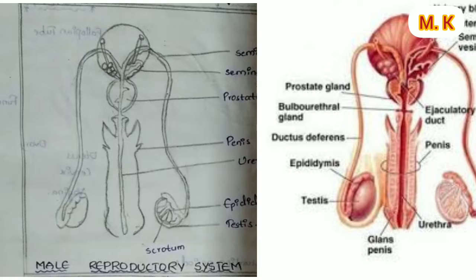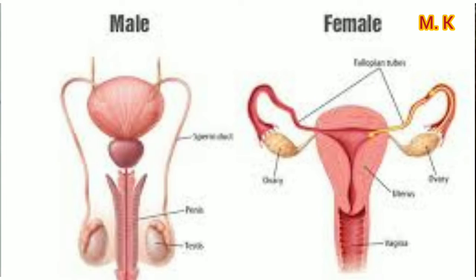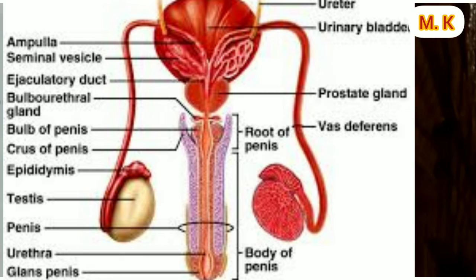The function of Vasa efferentia: the seminiferous tubules open into Vasa efferentia, and they carry sperms into the epididymis. Epididymis function: the Vasa efferentia open into the epididymis, which is a highly coiled tube located along the posterior side of the testes. Sperms are stored in them.